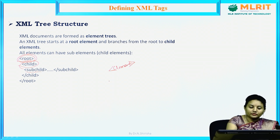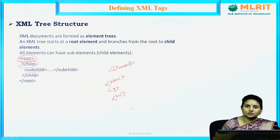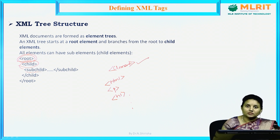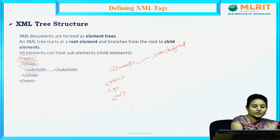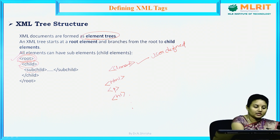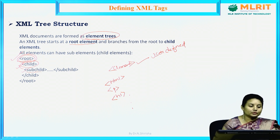In HTML we have written tags like p, h1 — these are all elements. But in XML the elements are user-defined, as we already know. XML documents are formed as element trees. Here, tree means there is a root tag, under that a parent tag, then a child tag, and under that a sub-child tag. XML tree starts with a root element and branches from the root to child elements.